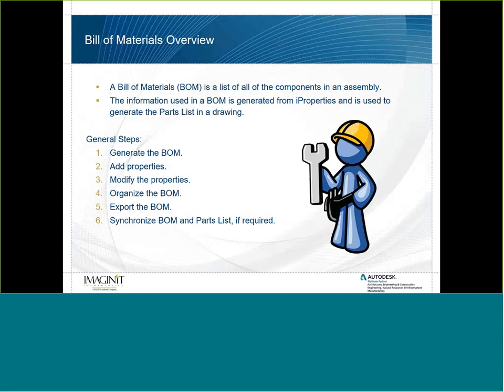The Bill of Materials, or the BOM, is one of the more important things you have as part of your documentation with your fabrication drawings or anything else you're creating out of Inventor software. I commonly find that people mistake Bill of Materials with Parts List and try to interchange those two things. Generally, the Bill of Materials is the master set of information that goes into your overall design, while the Parts List is simply a documented representation of your Bill of Materials which can be heavily modified depending on your company standards.